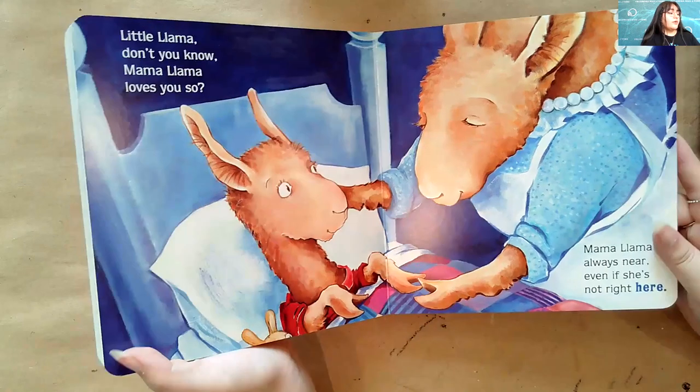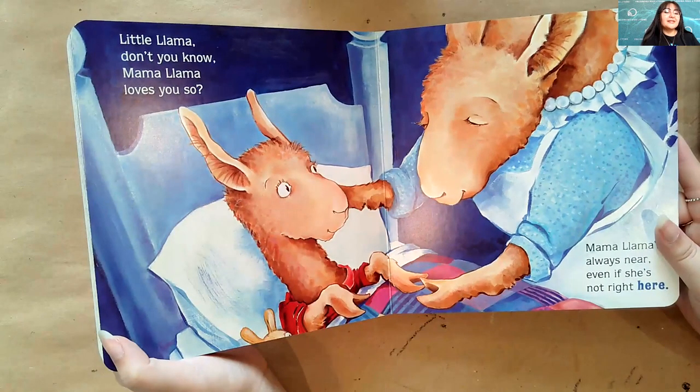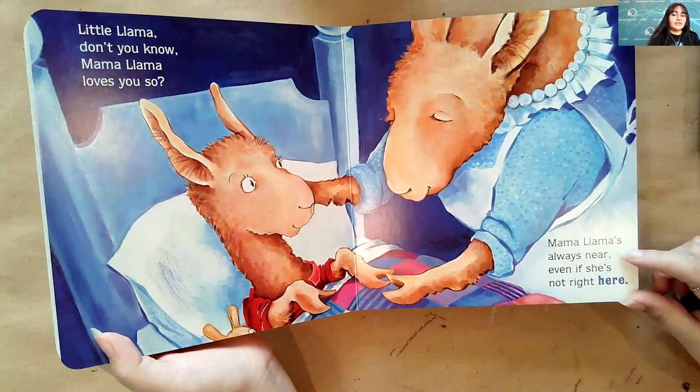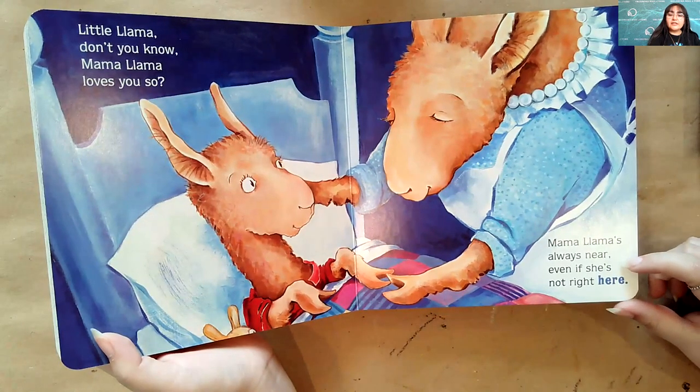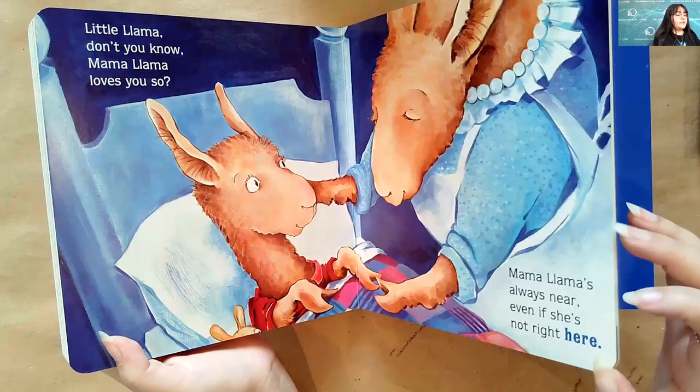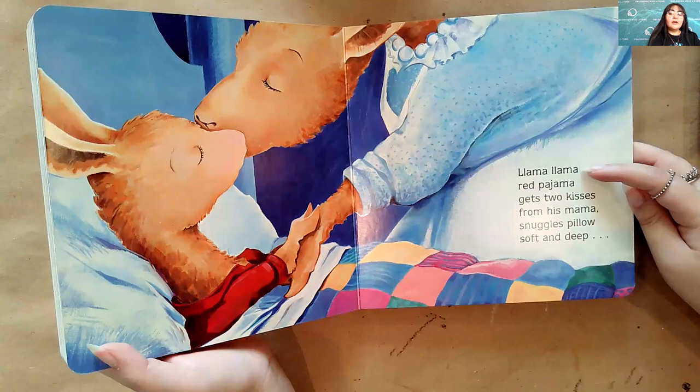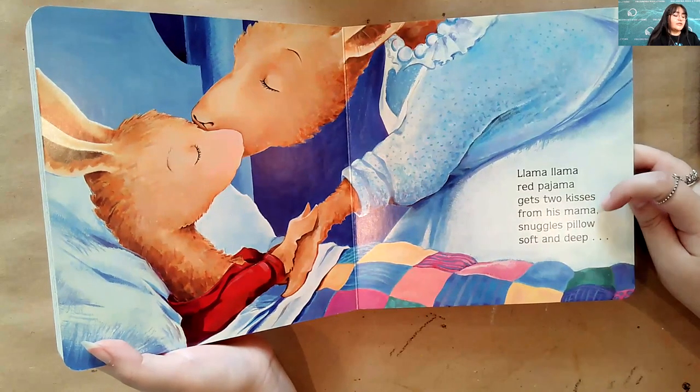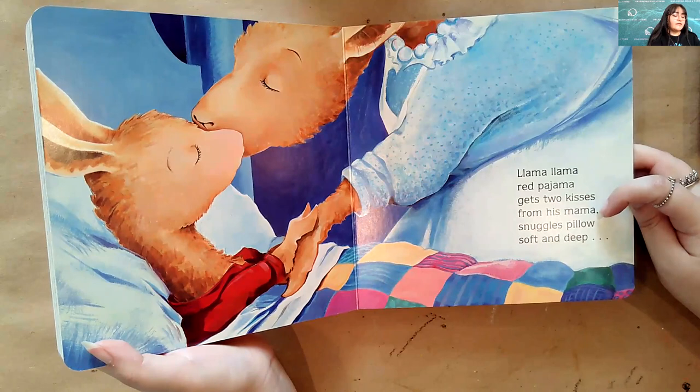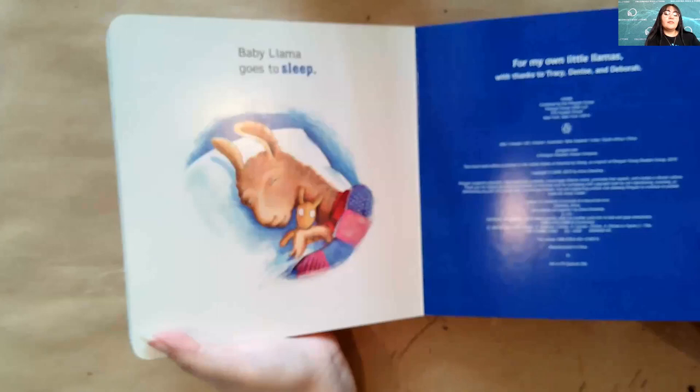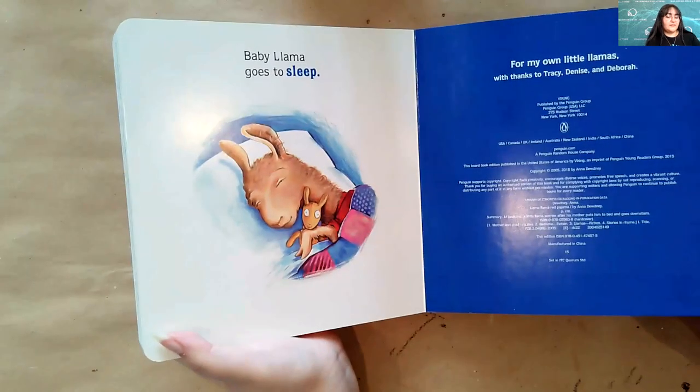Little Llama, don't you know? Mama Llama loves you so. Mama Llama's always near, even if she's not right here. There we go. Llama Llama Red Pajama gets two kisses from his mama. Snuggles pillow soft and deep. Baby Llama goes to sleep.